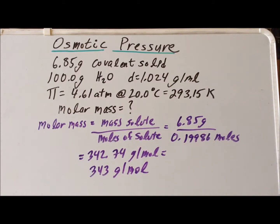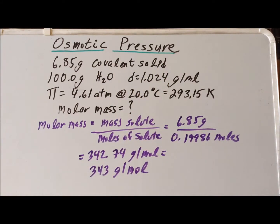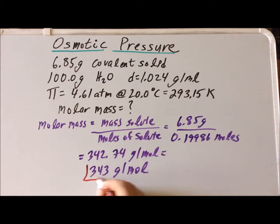Having solved the problem, it's worth noting the significance of specifying a covalent solid. Osmotic pressure is a colligative property, meaning it depends on the number of particles present. Since we have a covalent solid, it does not ionize or break up into multiple particles — each molecule contributes as one particle. If it were an ionic solid, we would need to account for how many ions it produces when dissolved. Since it's covalent, we have a one-to-one relationship, and the molar mass of our covalent solid is 343 grams per mole.